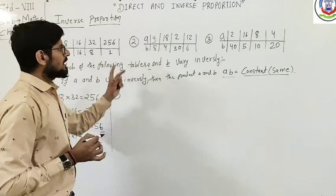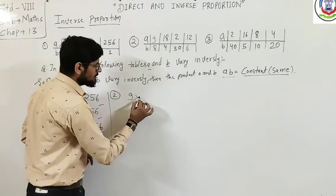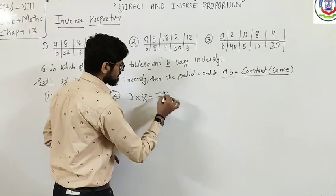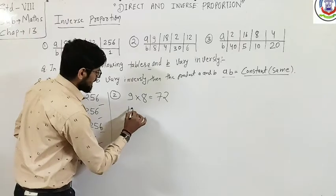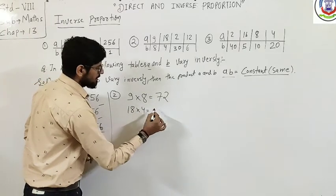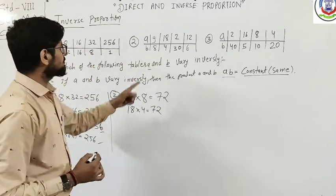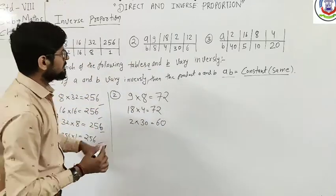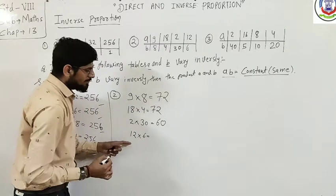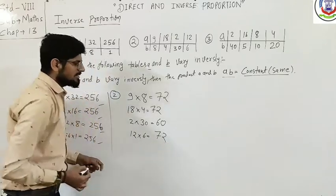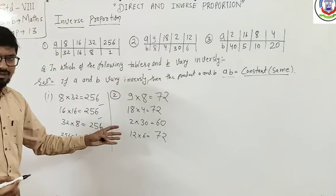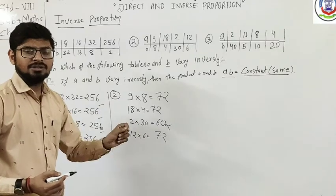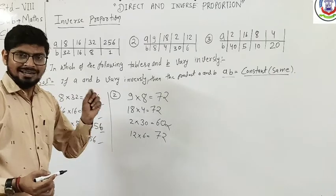For the second one, the corresponding values are 9 and 8: 9 × 8 = 72. Then 18 × 4 = 72. Then 2 × 30 = 60. And 12 × 6 = 72. The products are not all the same, so A and B are not in inverse proportion. The product must be the same throughout — that is our condition.